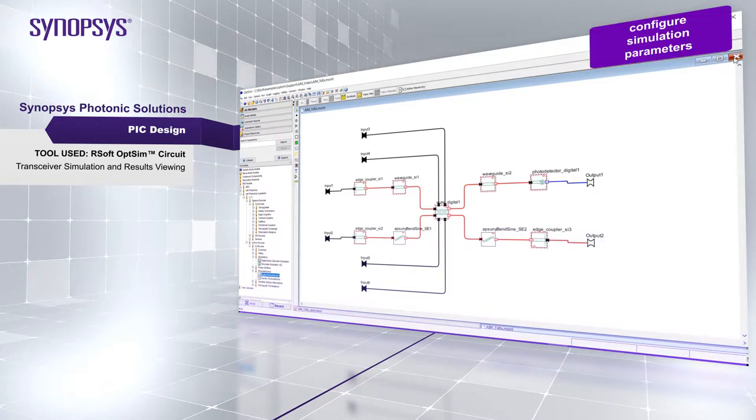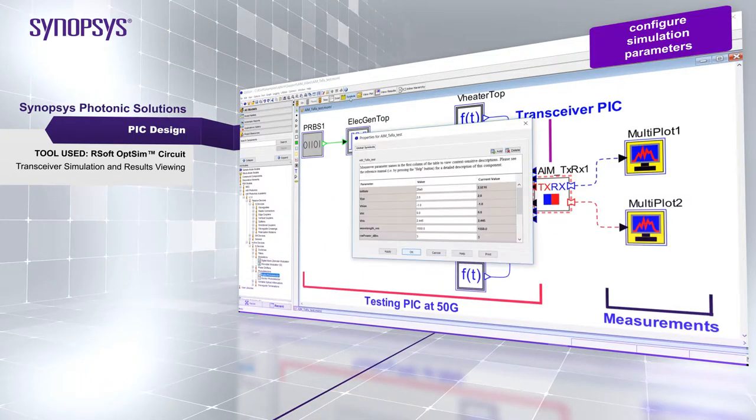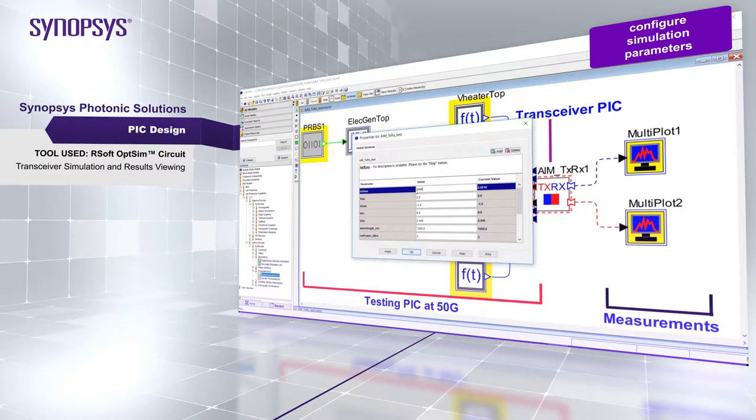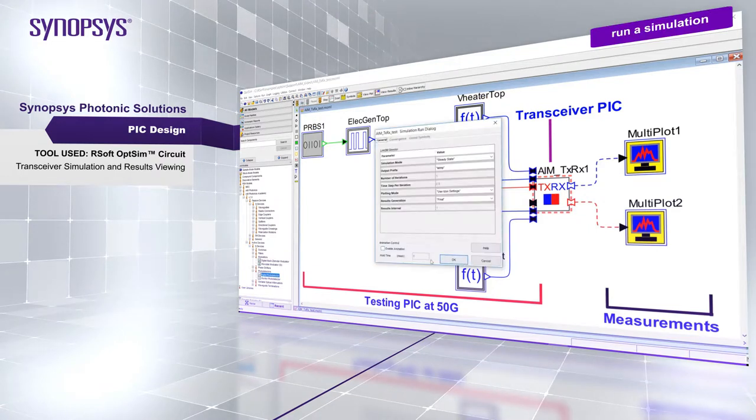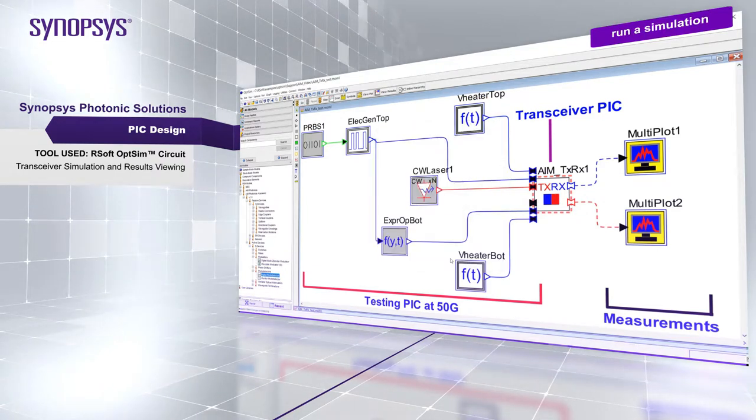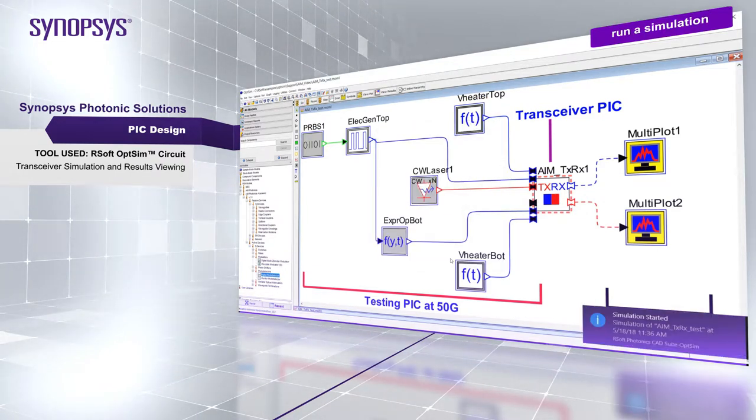Now you can place a hierarchical representation of your transceiver PIC in a test schematic. You can adjust the biasing of the MZM, then run a simulation to study the circuit characteristics in the time and frequency domains, such as the photo detector output eye diagram for a 50G back-to-back operation.